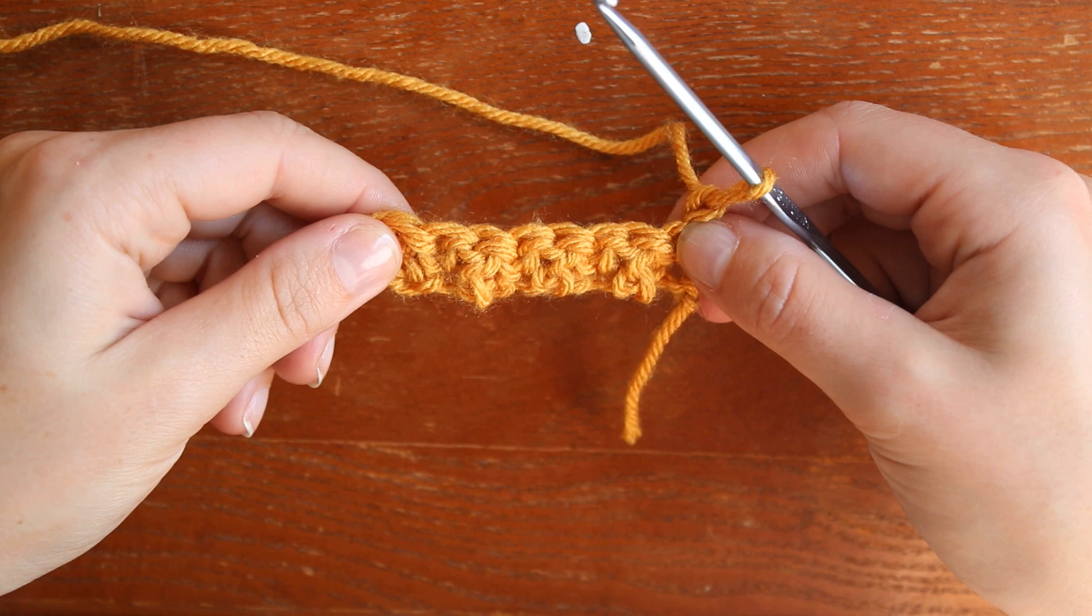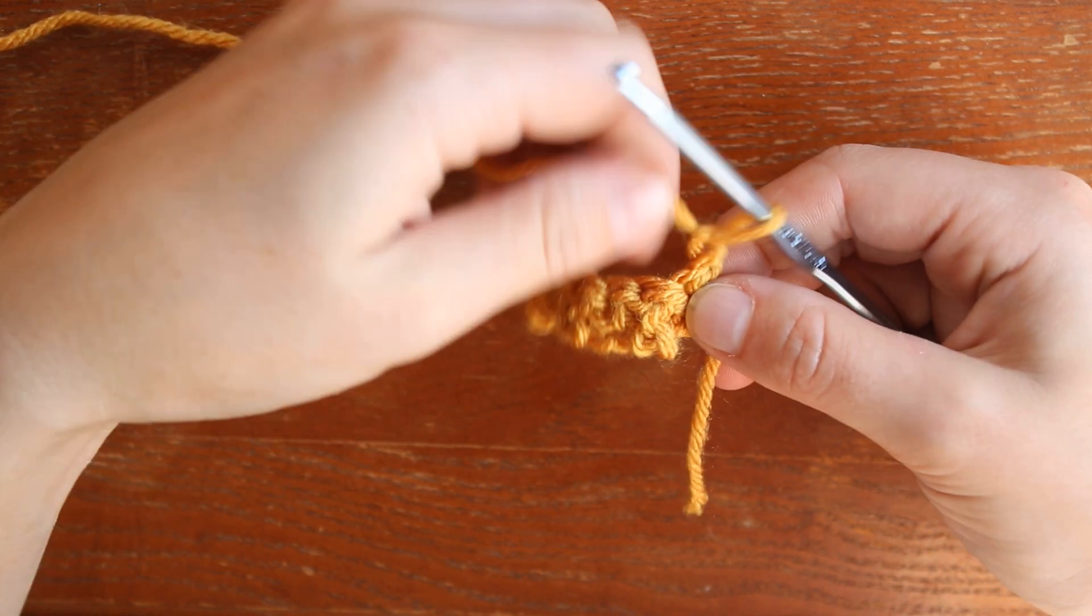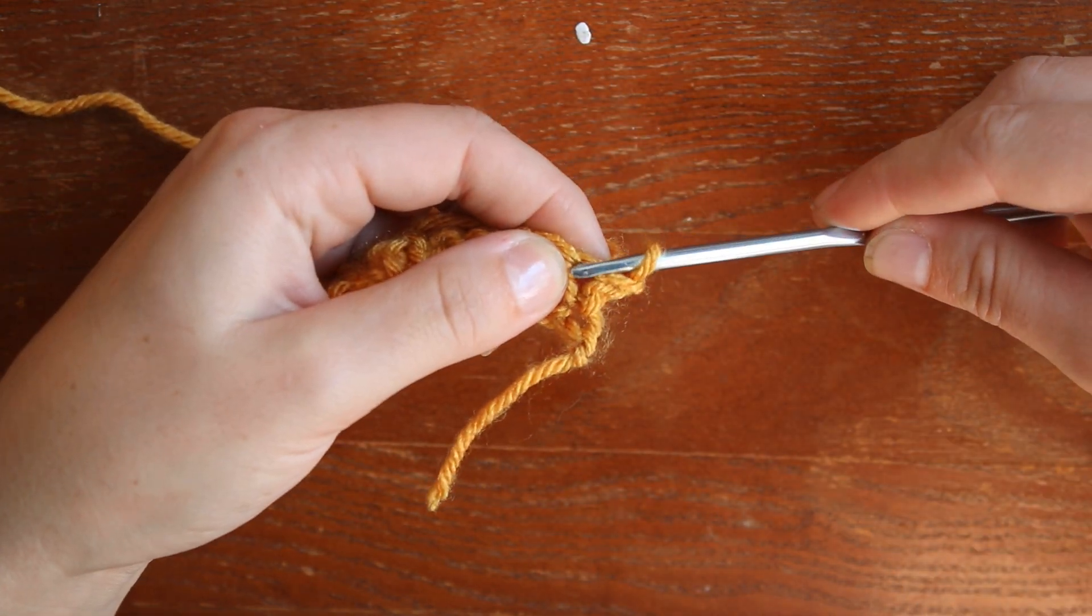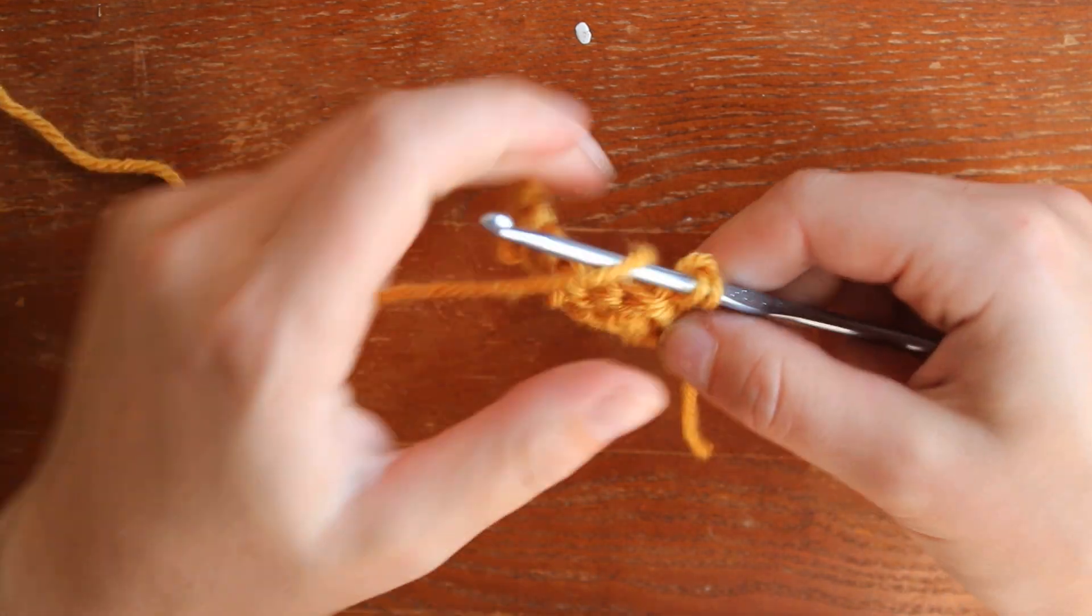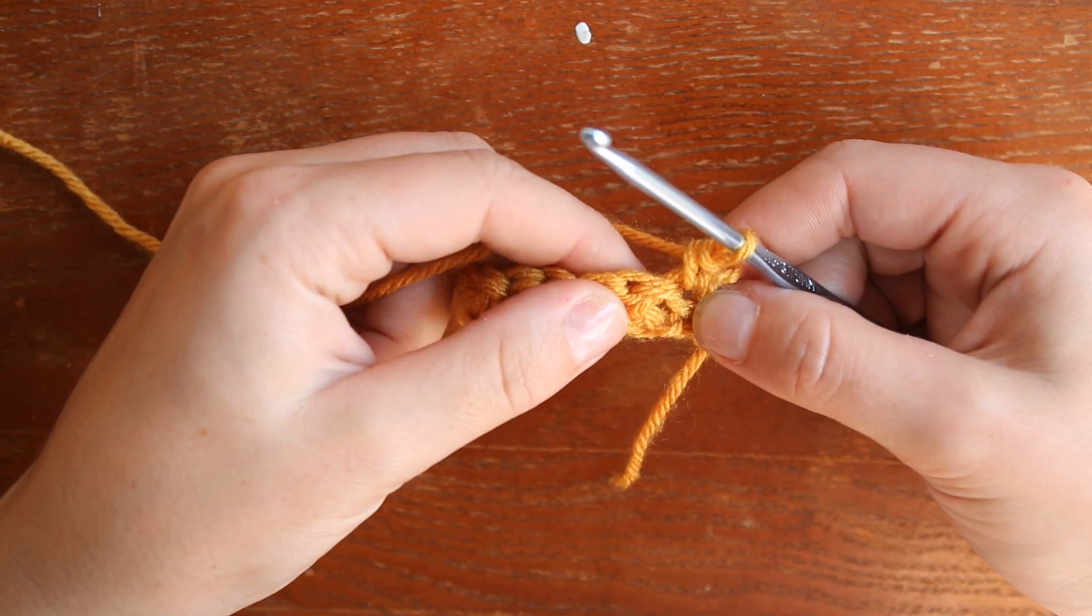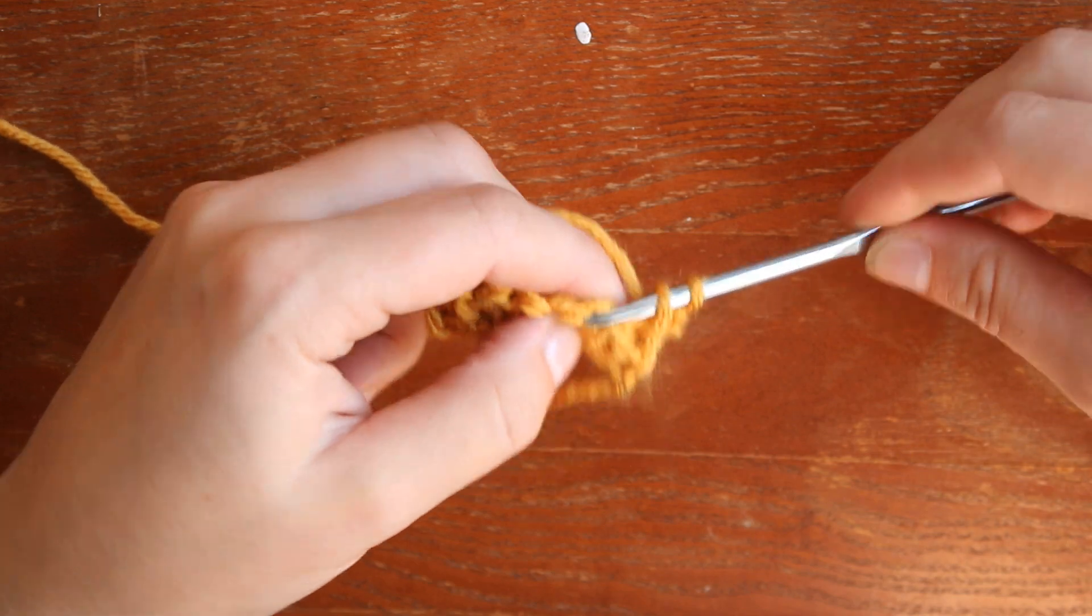So I skip the very first chain, go into the second, do a single crochet, and then do a double crochet. And you just keep repeating this until you get the length and width that you want.